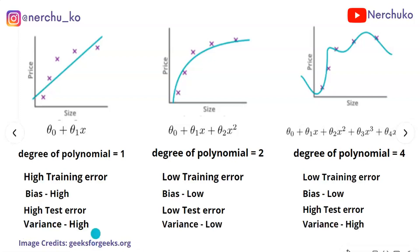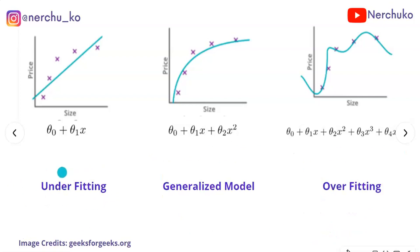In summary: the first image has high training error, high bias, and high variance — this is underfitting. The second image has low training error and low test error — low bias and low variance — this is appropriate fitting, the generalized model. The third image has low bias but high variance — low training error but high test error — this is overfitting.